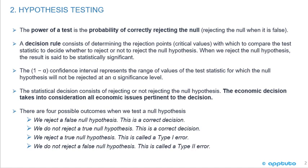A decision rule consists of determining the rejection points, or critical values, with which to compare the test statistic to decide whether to reject or not reject the null hypothesis. When we reject the null hypothesis, the result is said to be statistically significant.